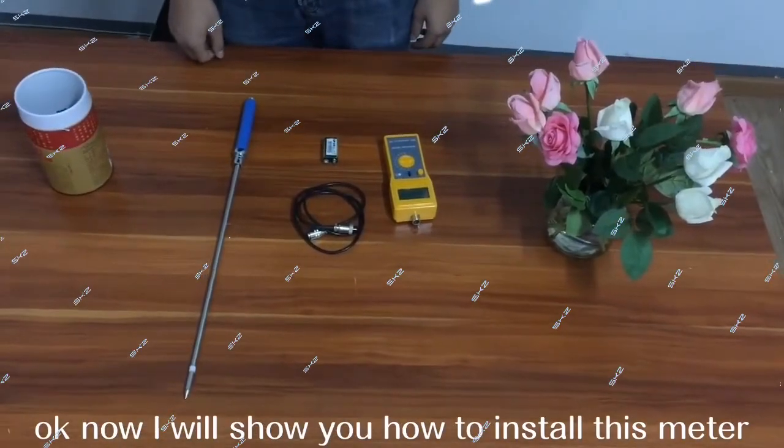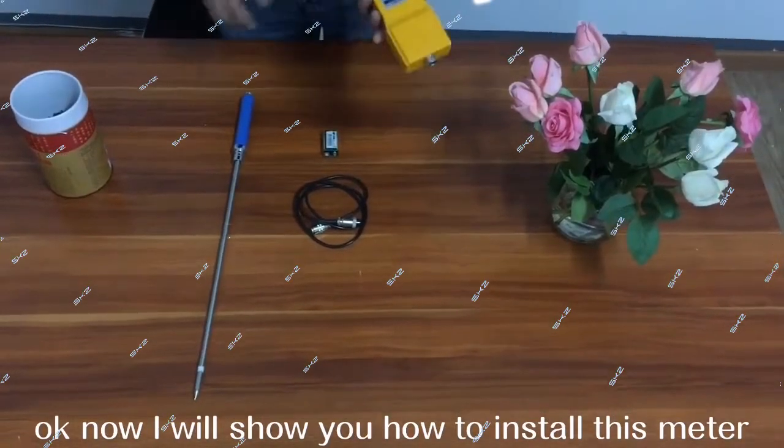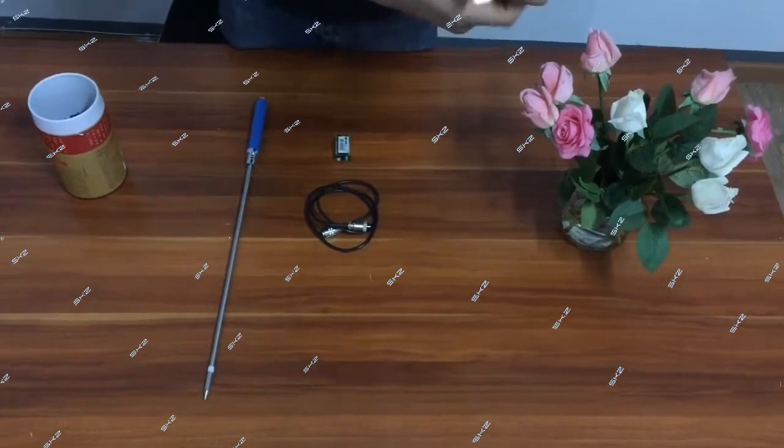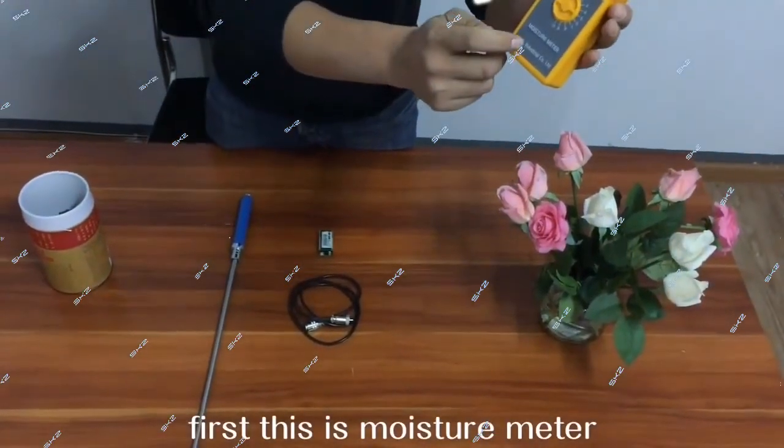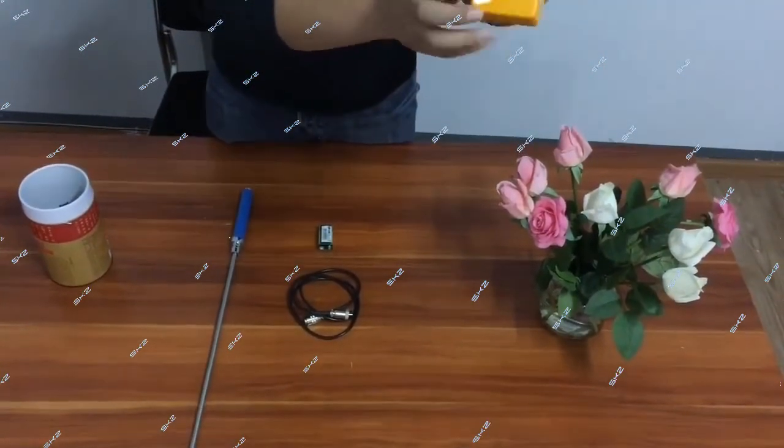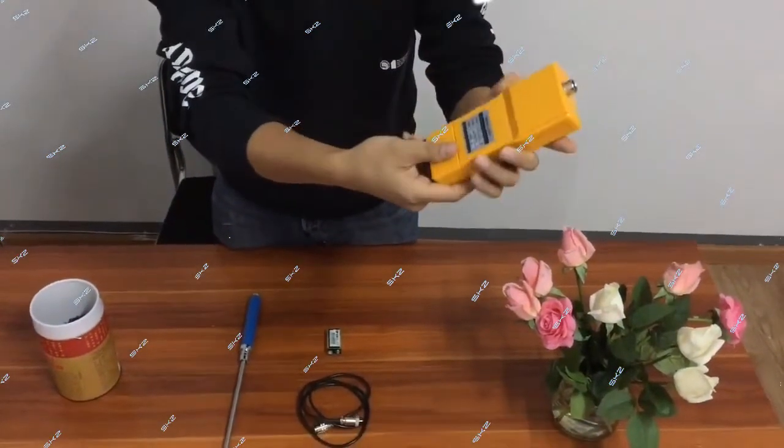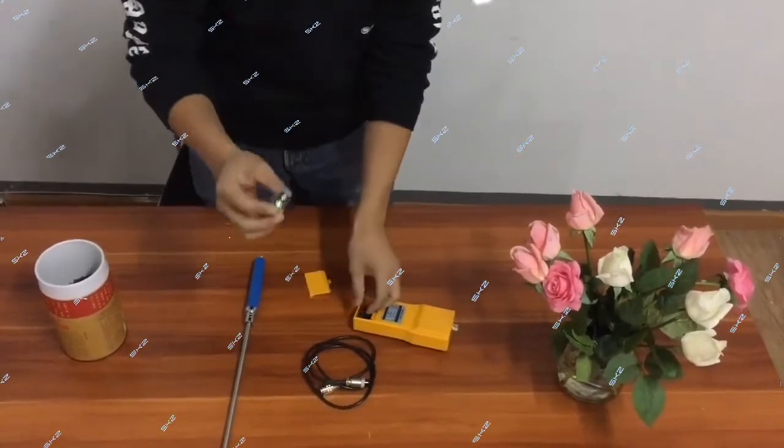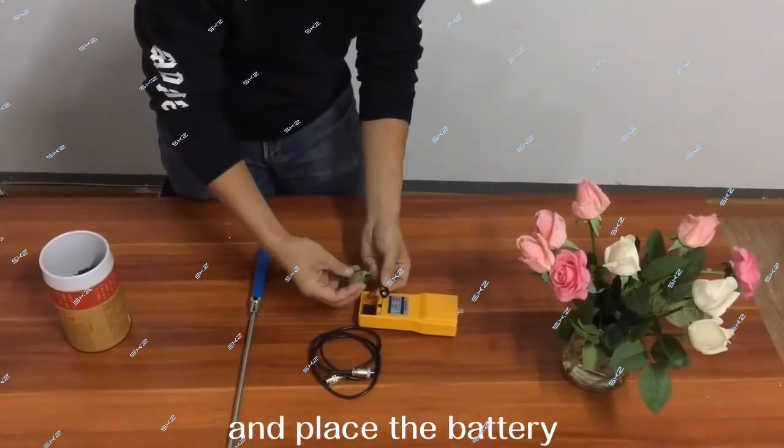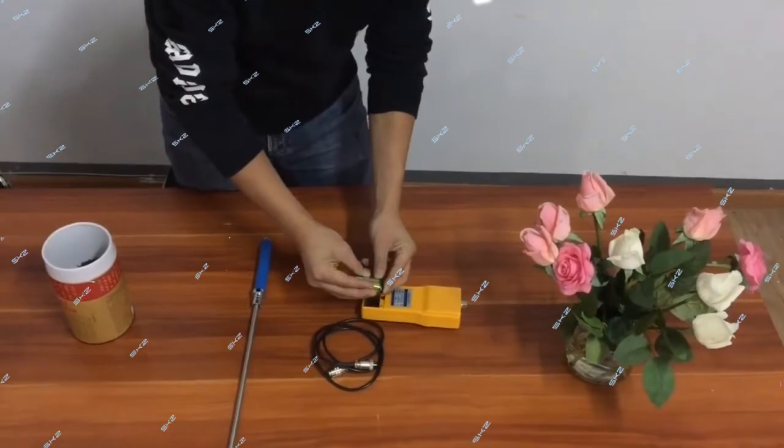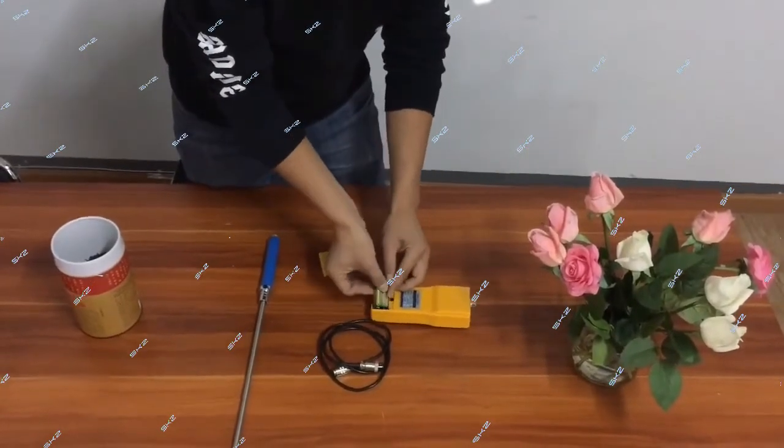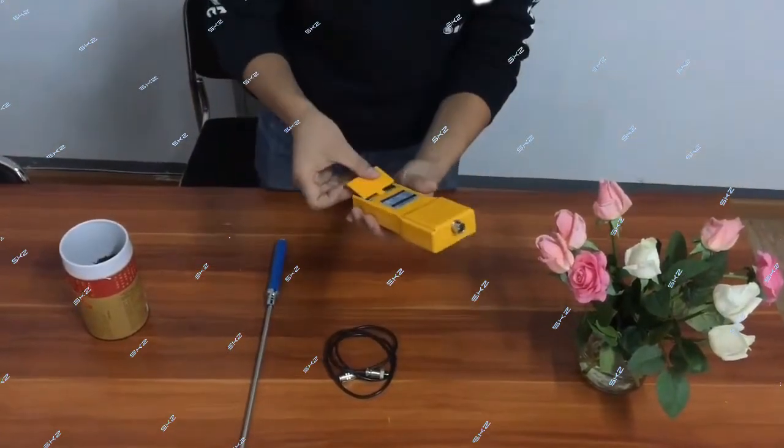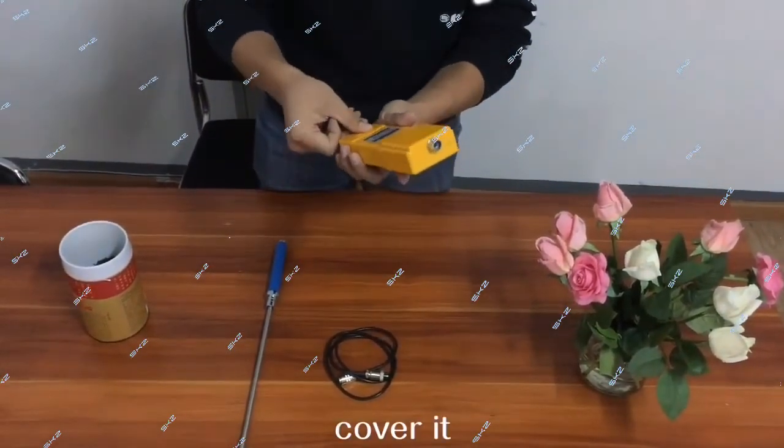Now first I will show you how to install this meter. First, this is the mass meter. And here, the name card. Open the back. And I fix the battery. Cover it.